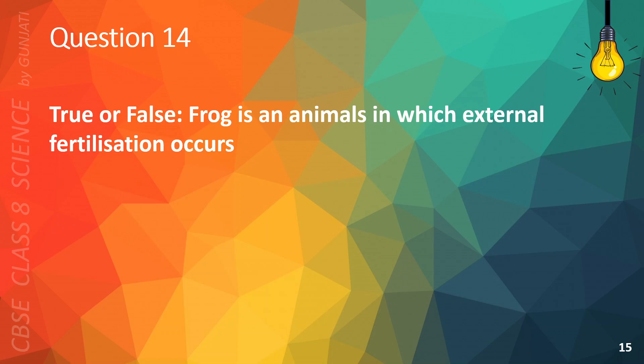Question 14. True or false: Frog is an animal in which external fertilization occurs. The correct answer is A. True.